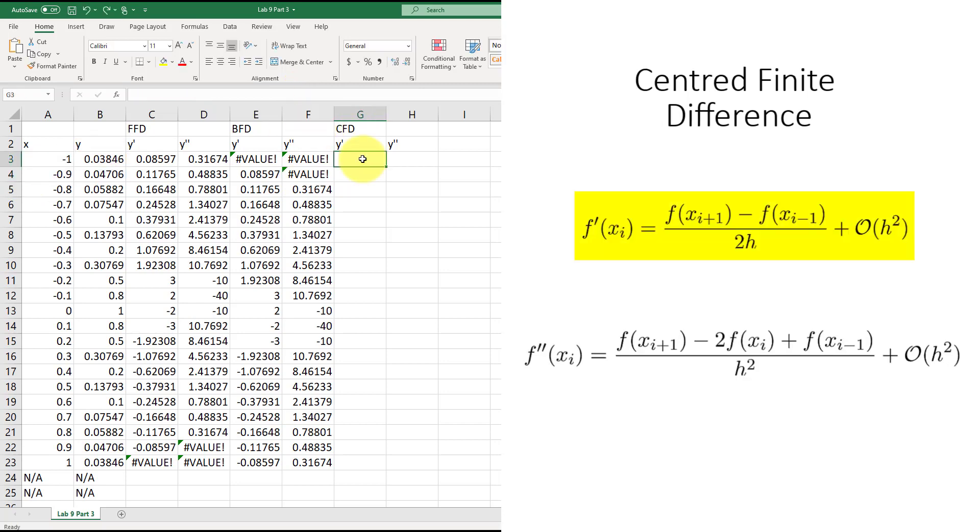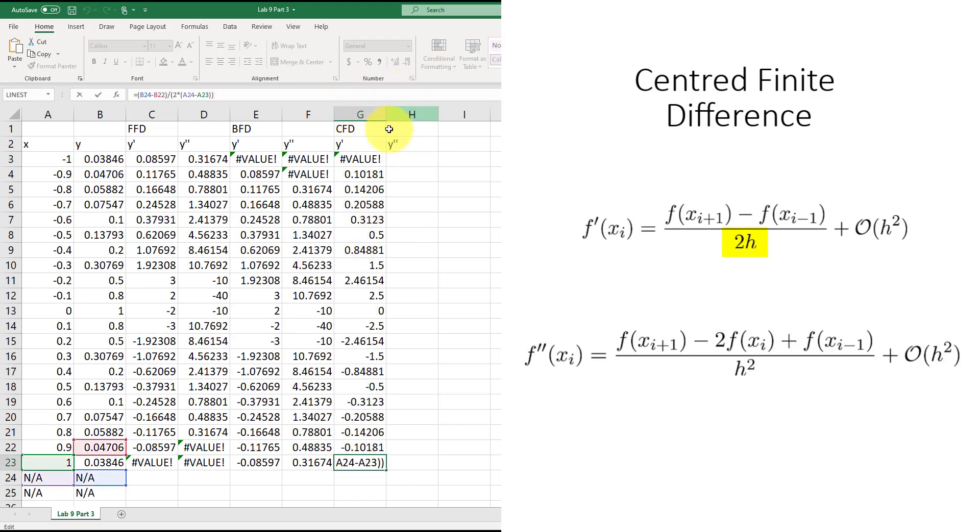Finally, moving on to CFD, which is equal to f(x_i+1) minus f(x_i-1) divided by 2 times h, which is A4 minus A3. For this one, you can see the first derivative does not exist, and the last derivative also does not exist. CFD can also be calculated as the average of the forward and backward finite difference. We can do that by setting it equal to FFD plus BFD divided by 2, and we get the same results.